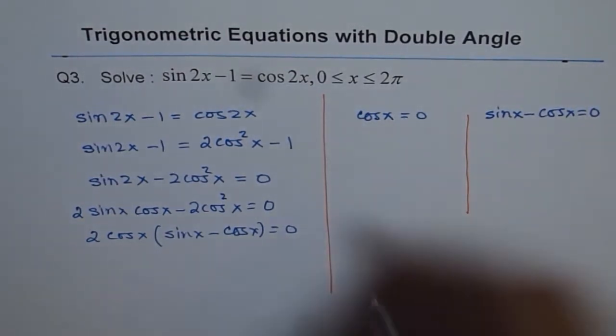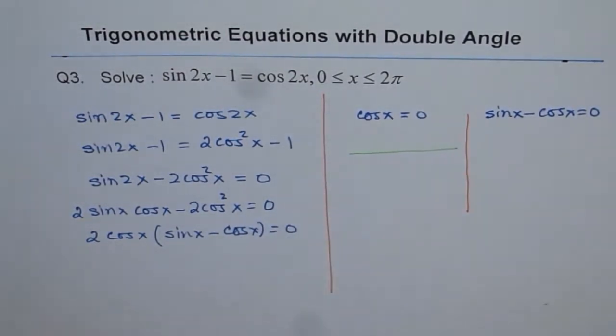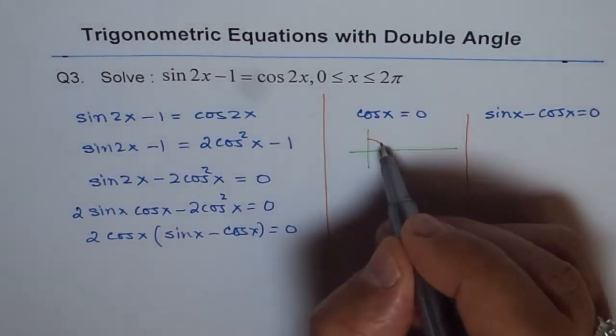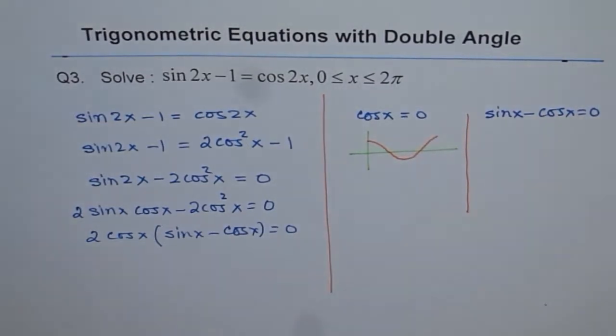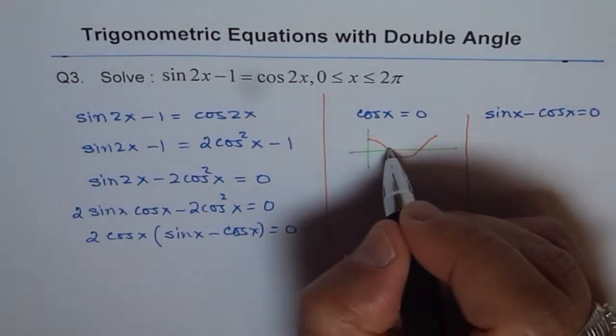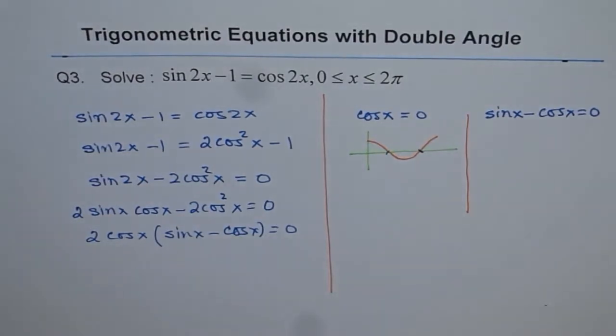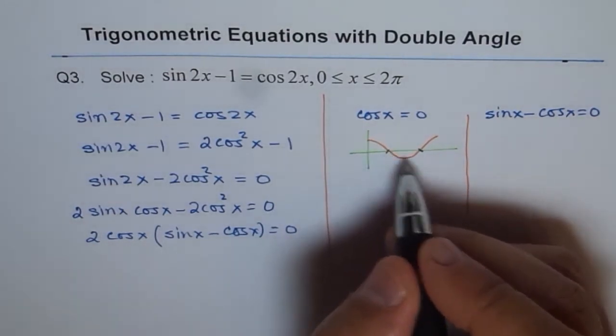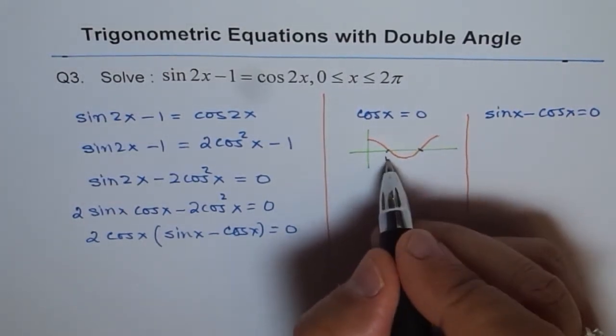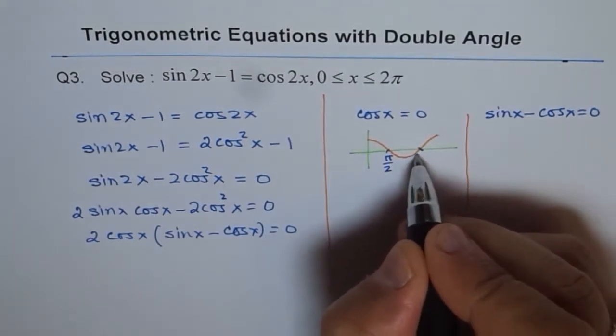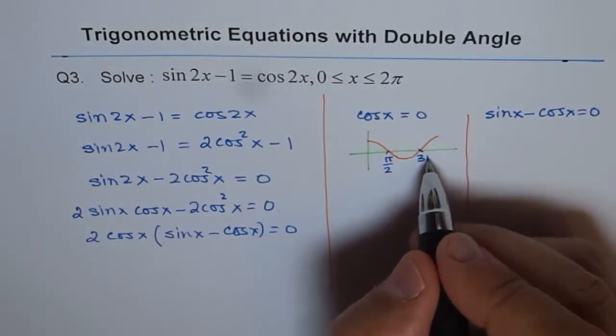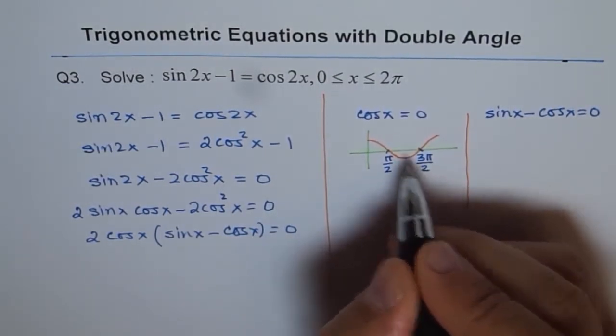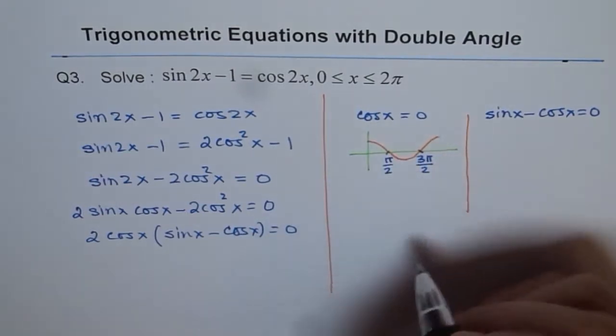To find where cos x is 0, let me sketch the cosine function. It's a good idea to sketch and see. These points are 0, π/2, π, 3π/2, and 2π. For cos x equals 0, these two points are π/2 and 3π/2.